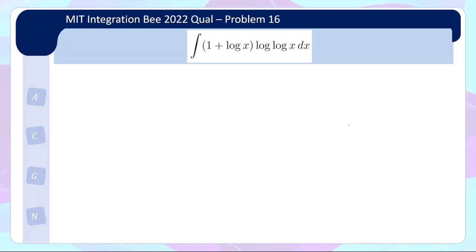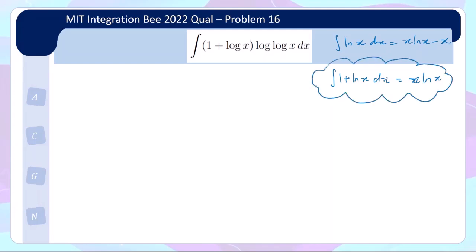This is an extended version of the classic integral of log x. When you see so many logs, you want to use integration by parts. First, recall the trick: ∫log x dx = x·log x − x. Equivalently, ∫(1 + log x) dx = x·log x, which you can verify by differentiating x·log x to get 1 + log x. Writing this down first suggests that integration by parts is a good idea.